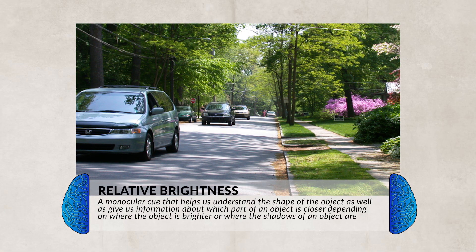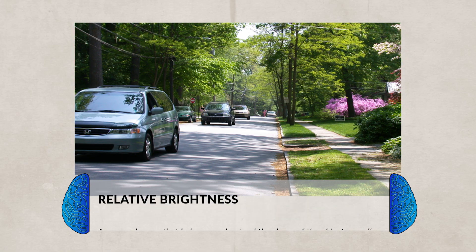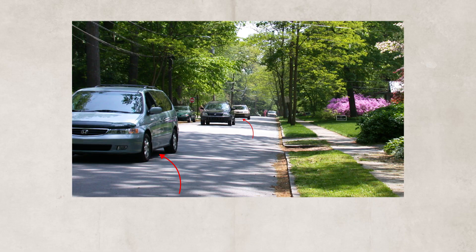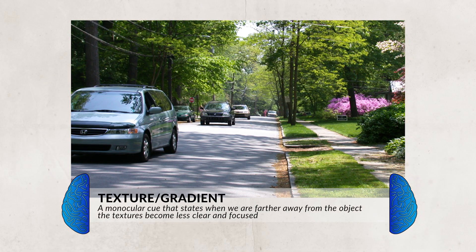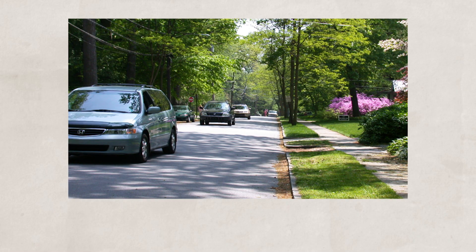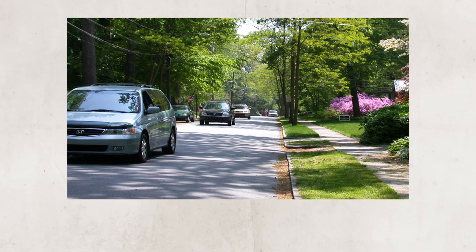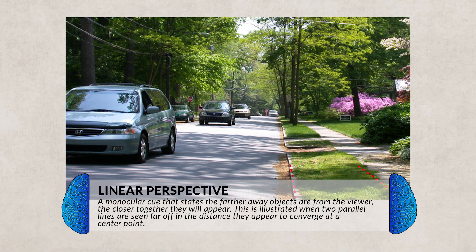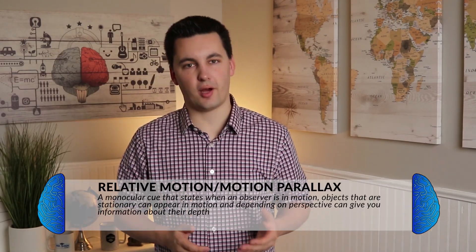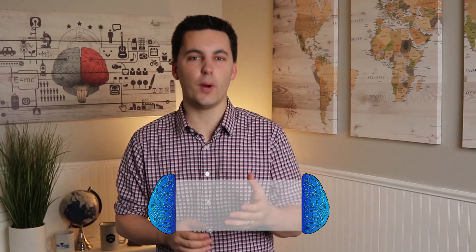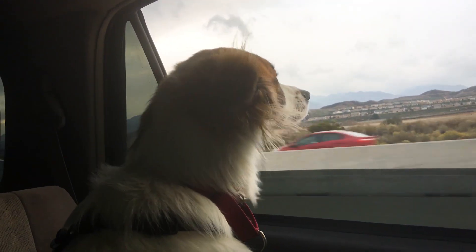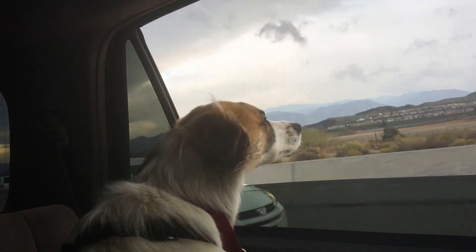The next monocular cue is shading and contour, or light and shadow, also called relative brightness. This allows us to see the form of an object, which we can see from the different shadows of cars and trees. Areas that are hazy and have less detail appear to be farther away. The next cue is texture gradient — parts of an image that are clear and have more detail appear closer, while parts that lack detail appear blurry. The last cue is linear perspective, where parallel lines appear to converge at a point in the distance, helping us understand depth and location. One other monocular cue is motion parallax, or relative motion — things closest to you appear to be moving quickly, while things farther away appear to be moving slowly. Think about being in a car: the cars right next to you appear like they're flying by, while the scenery in the distance appears to be moving slowly.